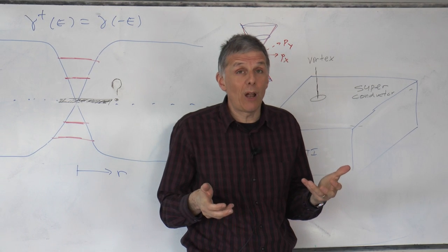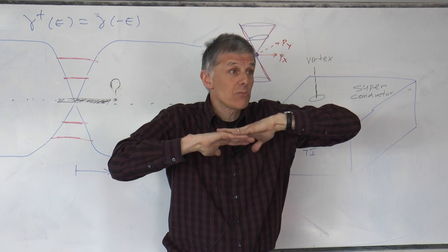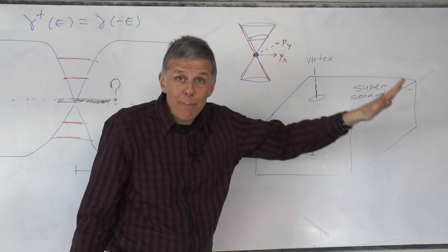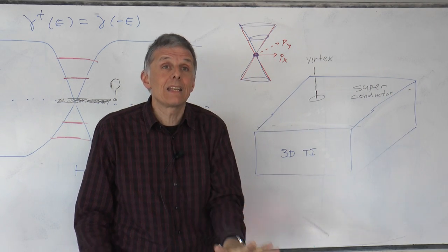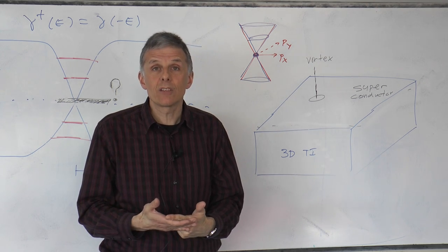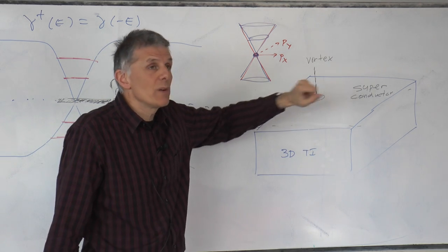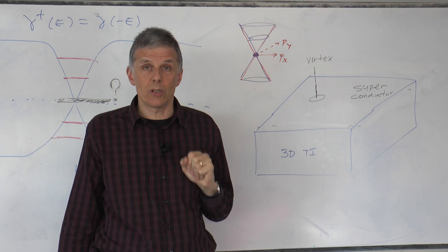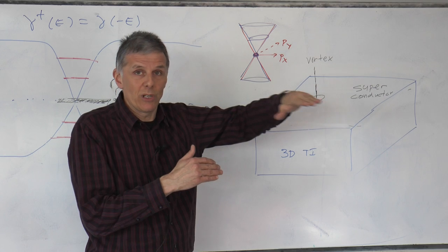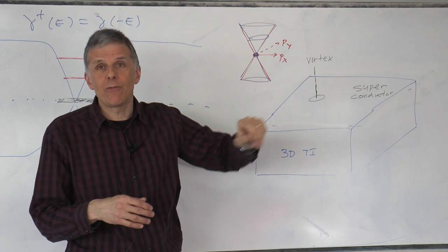A three-dimensional topological insulator has a two-dimensional conducting surface which behaves very similarly to graphene, has the same dispersion relation, same massless Dirac fermions, with one key distinction. There's no degeneracy, no spin degeneracy, no valley degeneracy. Instead of doing this experiment in graphene where it would not work, you want to do it on the surface of a three-dimensional topological insulator. Make it superconducting by putting a superconductor on top, pierce a vortex through it, and you'll have Majorana fermions.